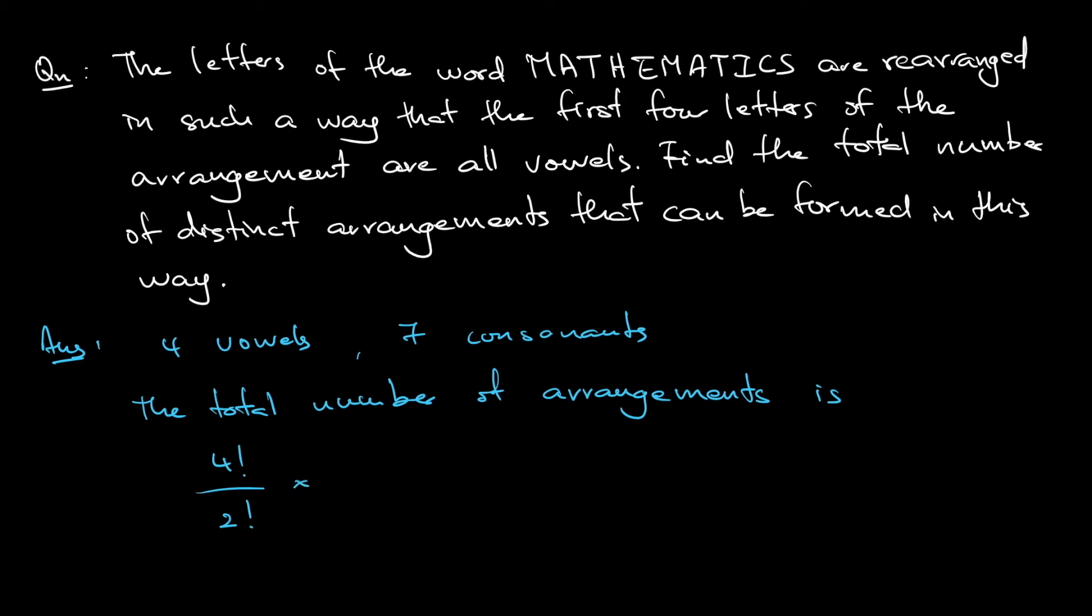Multiply that by the other seven letters, 7 factorial. Again, notice that there are two M and two T. So there is a duplicate of M as well as a duplicate of T. The first M and the second M are indistinguishable. Similarly, the first T and the second T are indistinguishable. So I need to divide 7 factorial by 2 factorial for the two M and divide by another 2 factorial for the two T.